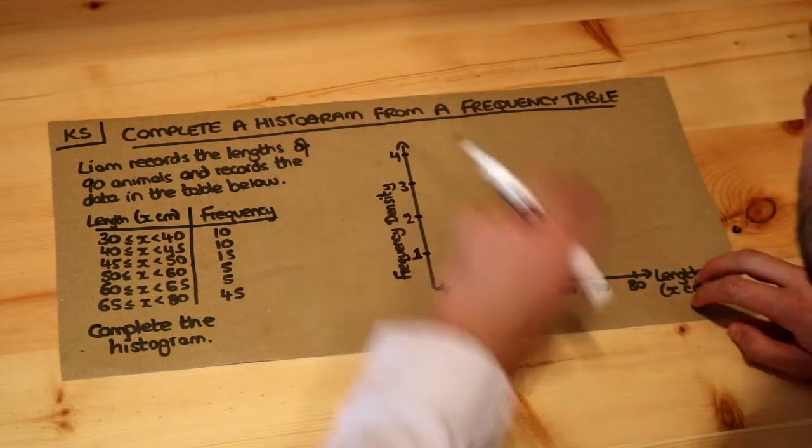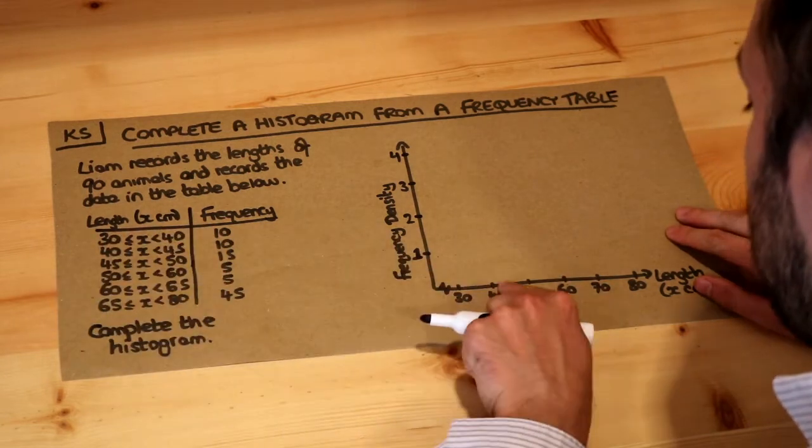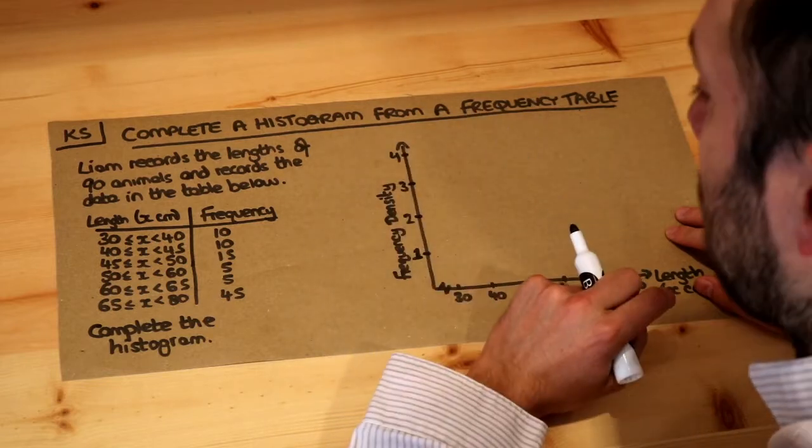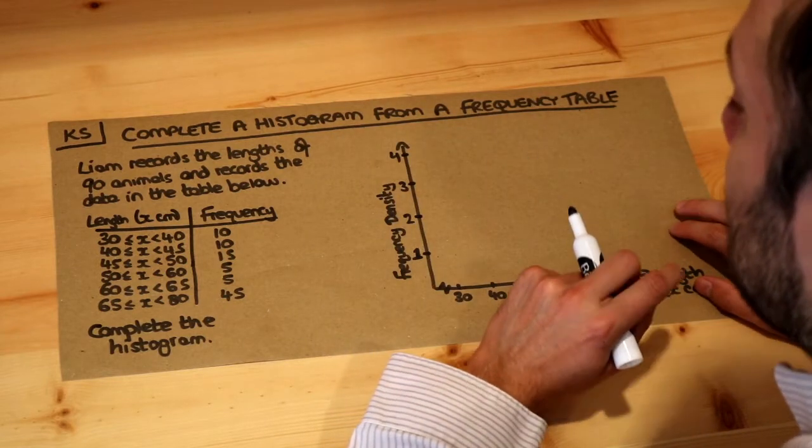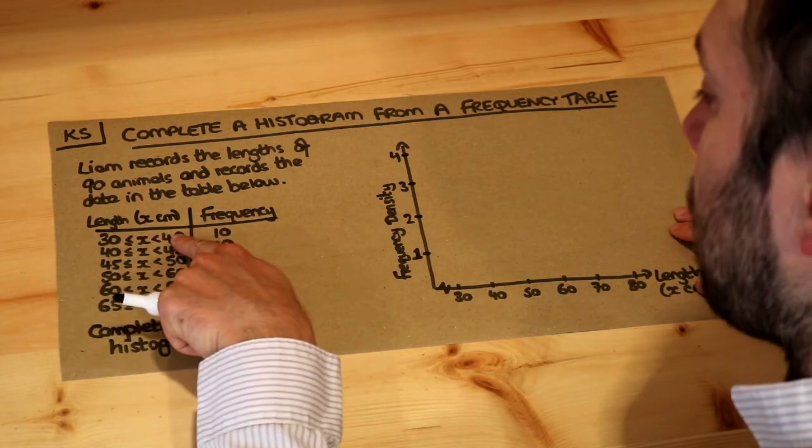Now the first thing to say is a histogram is not the same as a bar chart. You might be tempted to, for the 30 to 40, draw a bar that goes up to 10, and you can see this y-axis doesn't even go up to 10. The problem is it's not really fair because we've got 10 animals between a length of 30 to 40.